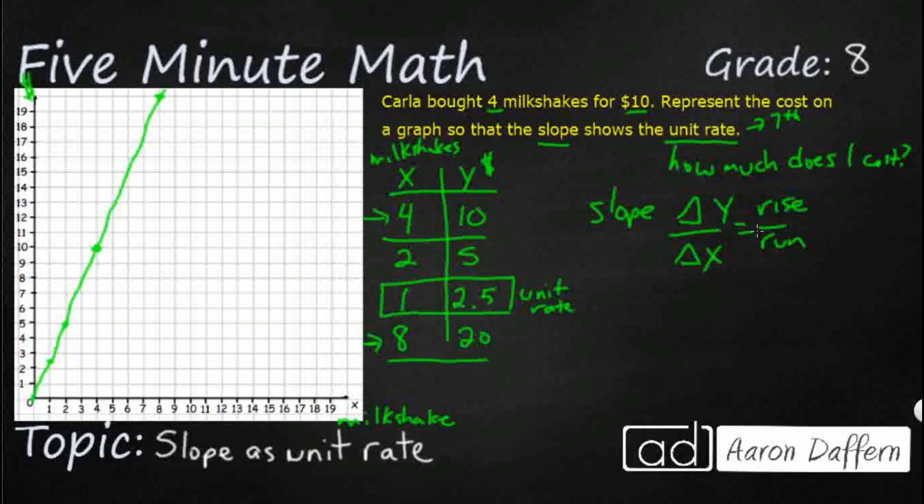So I'm just going to take this point right here and this point right here. So change in Y, that's going to be 20 minus 10 over my change in X, so I've got my 8 minus 4. So what I've got here is it's going to end up being 10 over 4. So if I reduce that, that is going to get down to five halves or two and a half. And look at that unit rate 2.5, that's two and a half. So the slope equals the unit rate when you have a proportional relationship, and that's what this graph shows.